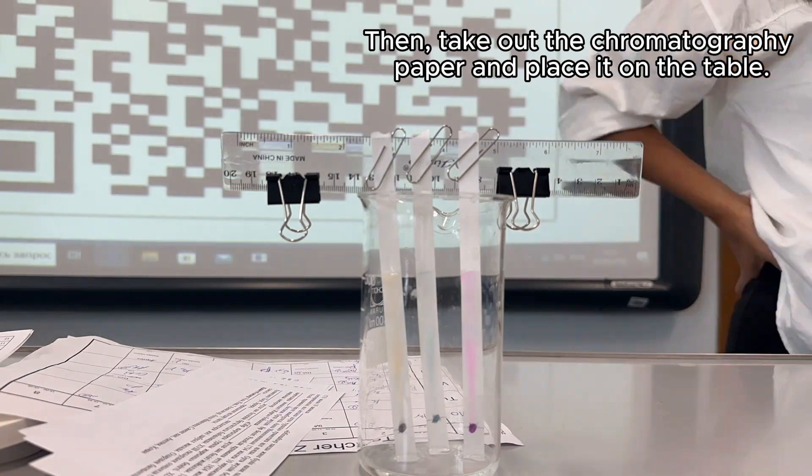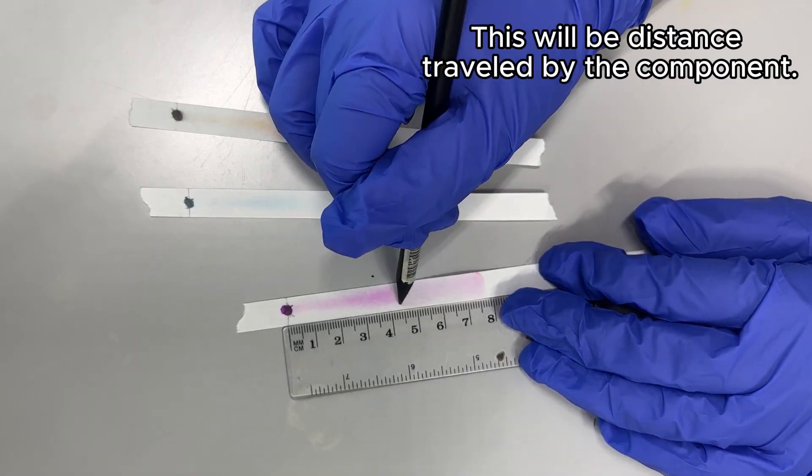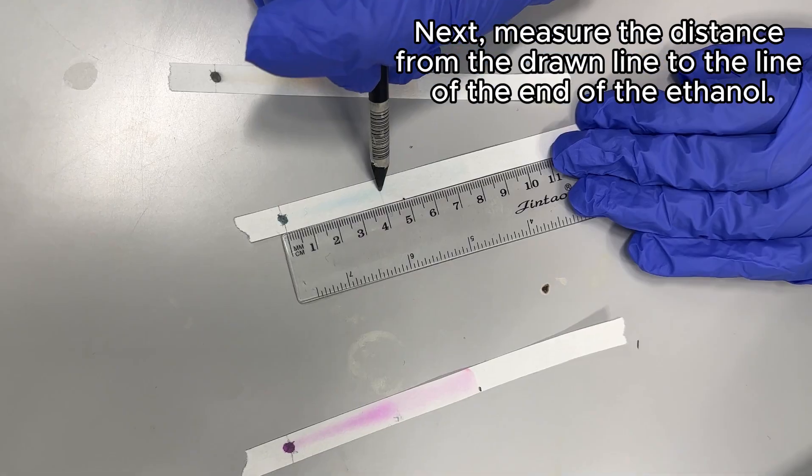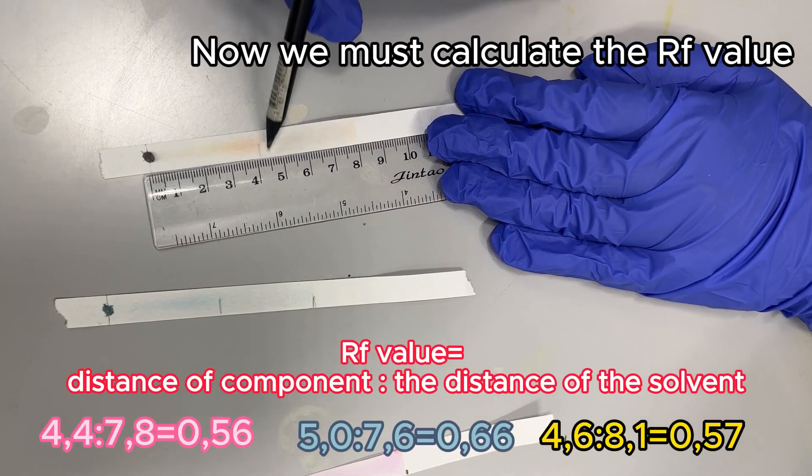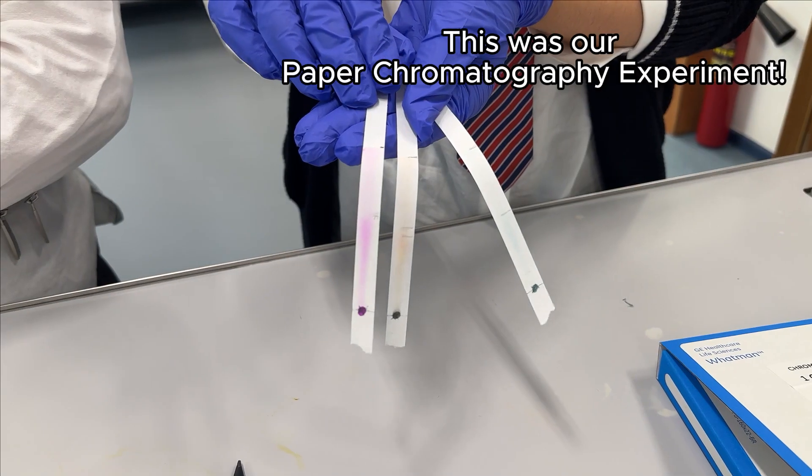Then, take out the chromatography paper and place it on the table. Using a ruler, measure the distance from the original drawn line to places where the pigment runs out. This will be the distance traveled by the component. Next, measure the distance from the drawn line to the line of the end of the ethanol. Now we must calculate the RF value using the formula below. This was our paper chromatography experiment.